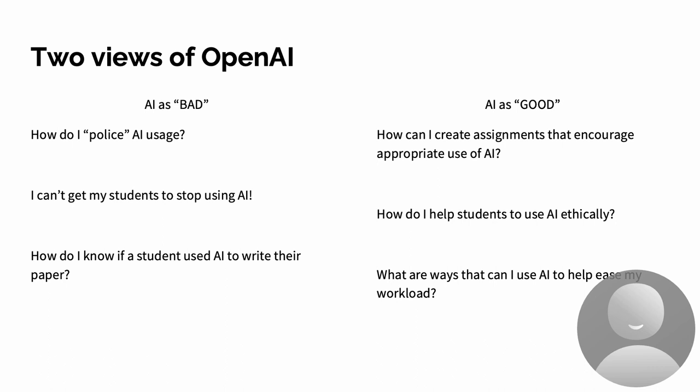The other camp is — I'm going to simplify here — the 'AI is good' camp. That is the literature and the colleagues who are saying, how do I embrace AI? AI is here to stay. What does it look like to be innovative and to use AI in a way that is going to promote effective teaching and learning? And while I appreciate both of these perspectives, I think that this bad/good dichotomy is problematic and that perhaps there is a third question that we should be asking in terms of AI usage.